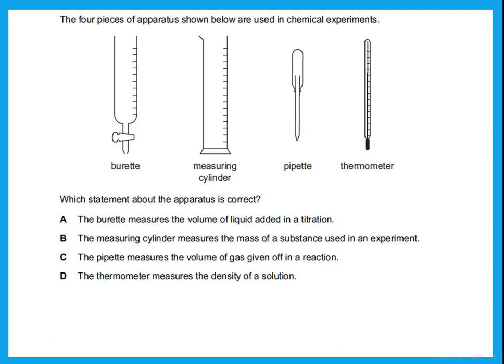Once you decide an answer is correct, check the rest to confirm they are wrong. Option B says the measuring cylinder measures the mass of a substance — that's wrong. Option C says the pipette measures the volume of a gas — wrong, the pipette measures volume of liquid. Option D says the thermometer measures density — wrong, it measures temperature. So A is the correct answer.